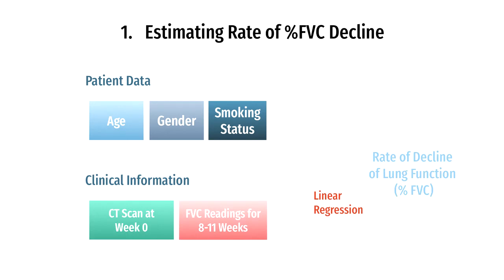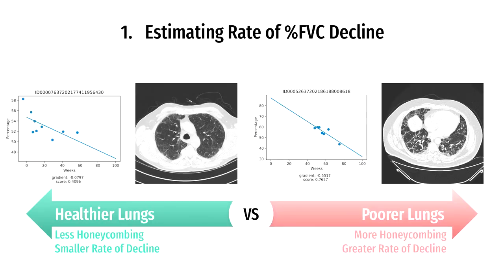To solve problem one, we estimated the rate of FEC decline by building a linear model using FEC values for 8 to 11 weeks for each patient, and estimated the slope of the values. Here is example output for two patients. Compared to the patient on the left with healthier lungs and more honeycombing, the patient on the right has poorer lungs with less honeycombing, and the estimated slope for this patient is much steeper.